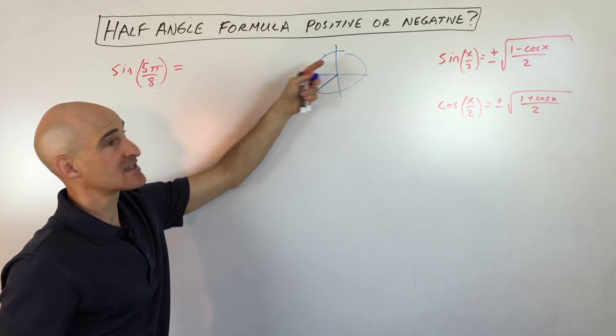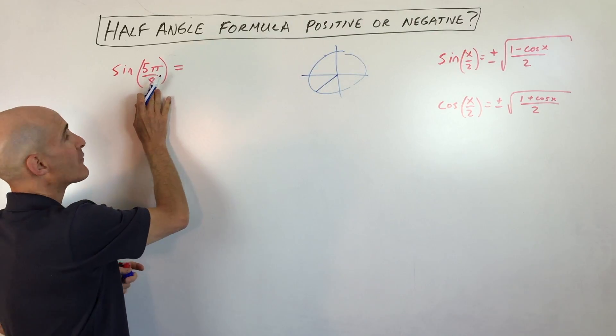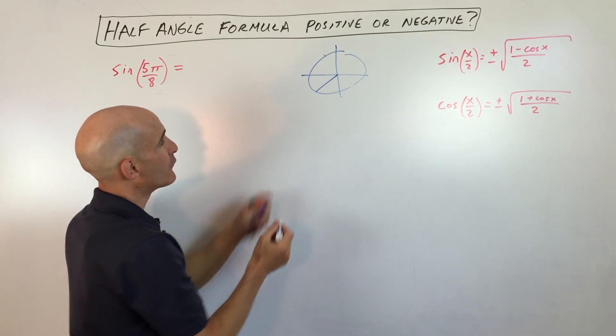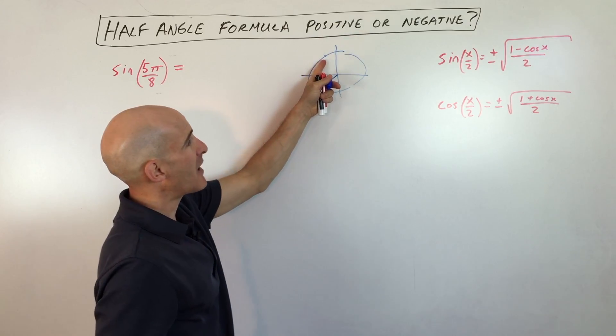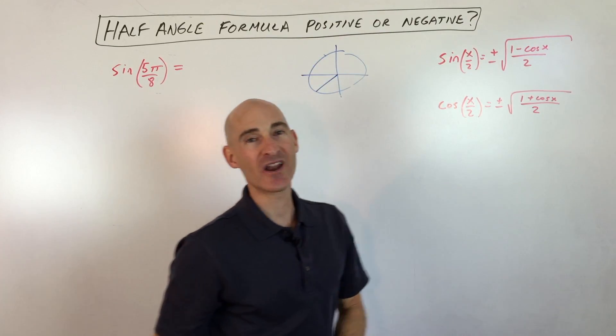Now, in the second quadrant, sine is actually positive. So we're interested in where 5π/8 is, not where 5π/4 is. So we're going to look at 5π/8, our actual angle, and we know that sine is positive, so we're going to use the positive quantity.